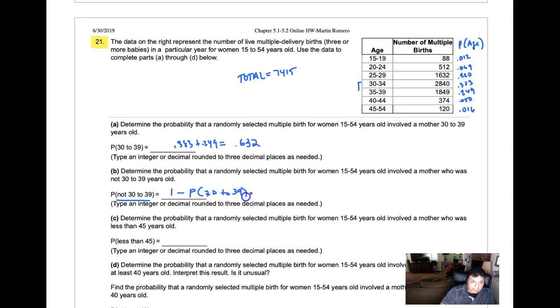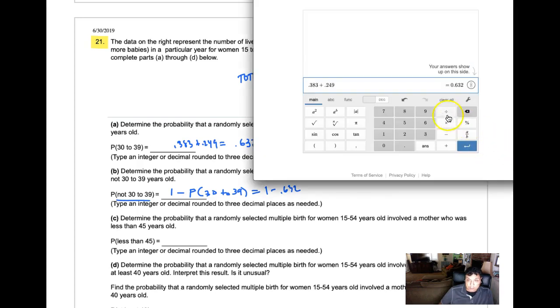It's everything not in that. To get that answer, it's 1 minus 0.632, which equals 0.368.